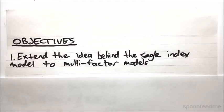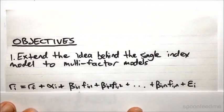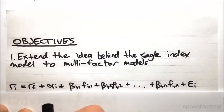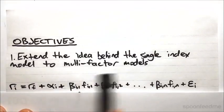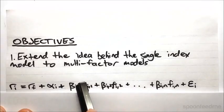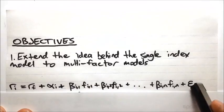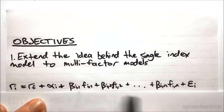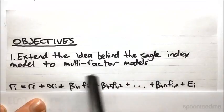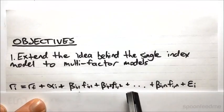The single index model can actually be made a bit less simple, and so more flexible by taking the idea behind it and extending it into what we call a multi-factor model, or just a factor model. Previously we said that the return on an asset was equal to the risk-free rate plus some alpha value plus beta times the market index plus our epsilon. We've just taken our single index and our single beta and replaced them by many factors to which we have various different levels of exposure.